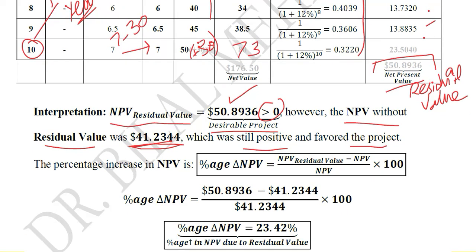Calculating the percentage change in NPV can be a useful thing to know. The percentage change in NPV equals the new value of NPV (with residual value) minus the old value of NPV (without residual value), divided by the original NPV (without residual value), then multiplied by 100. After substituting these values, we find that there has been a 23.42% increase in NPV due to the introduction of residual value, which is a substantial increase.